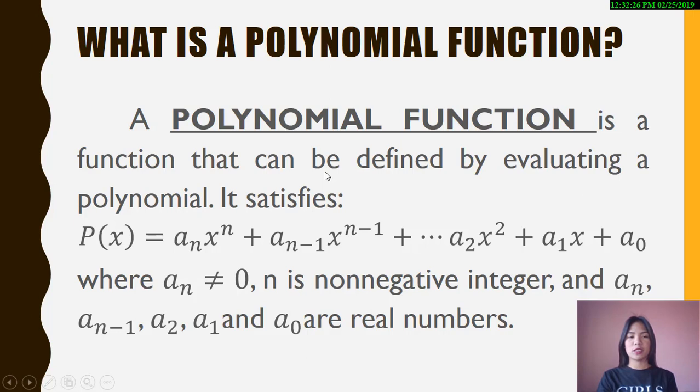A polynomial function is a function that can be defined by evaluating a polynomial. It satisfies P(x) = aₙxⁿ + aₙ₋₁xⁿ⁻¹ + ... + a₂x² + a₁x + a₀, where aₙ ≠ 0, n is a non-negative integer, and aₙ, aₙ₋₁, a₂, a₁, and a₀ are real numbers.